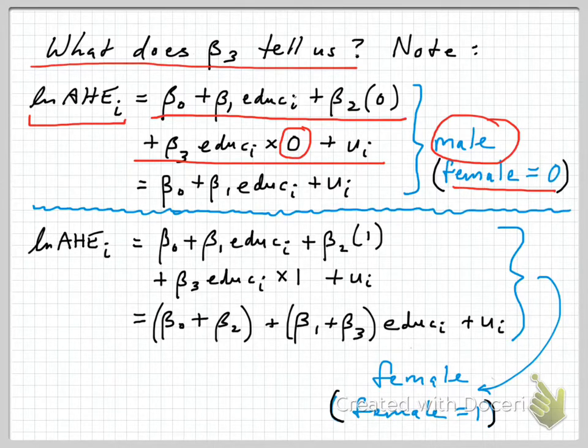We're left with a regression line that's this part right here. So for males, our regression line has a simple formula: beta 0 plus beta 1 times years of education, and of course the error term left over.